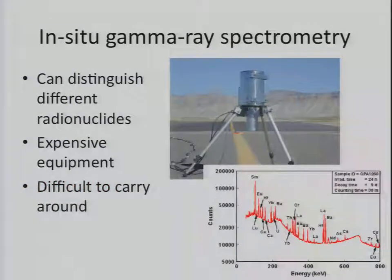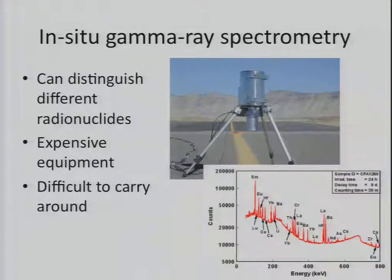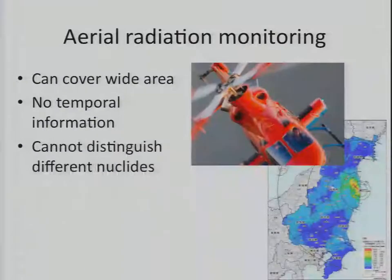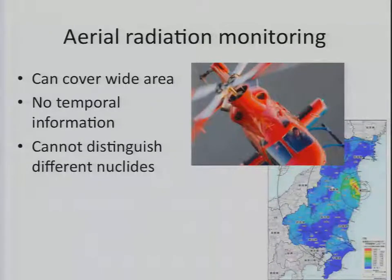So we would like to see these different radionuclides separately, although the data is a mixture of everything. There are instruments that can distinguish different types of nuclei — for example, you can do in situ gamma ray spectrometry, but this is rather expensive equipment that needs to be transported, which is kind of big. It has good nuclide resolution but it's difficult to transport and difficult to do measurements everywhere, especially densely. On the other hand, if you want spatial density you can do aerial radiation monitoring with a helicopter, but again you cannot distinguish different types of radionuclides, and because you cannot keep the helicopter flying around every day you cannot get high temporal resolution.